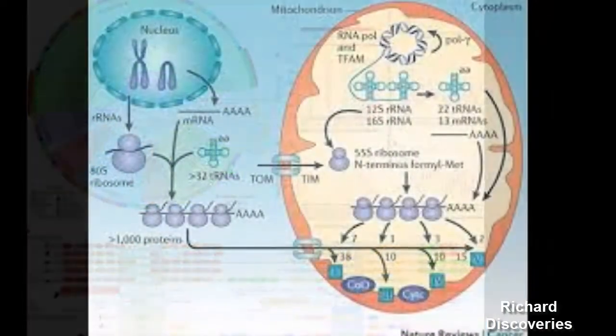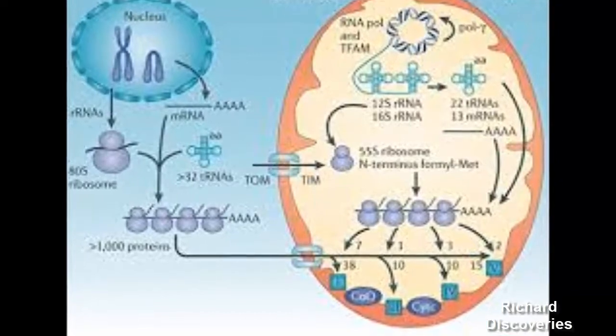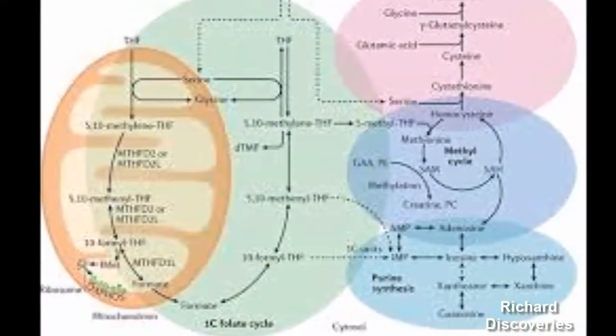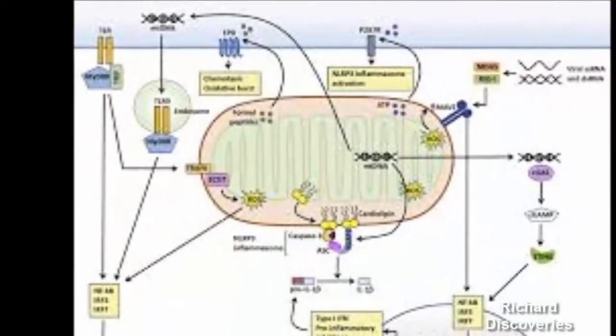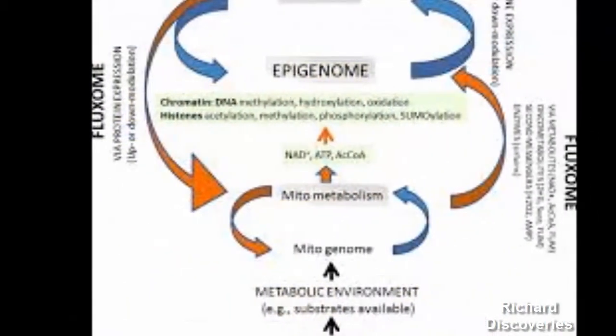Mitochondrial Eve and Y-chromosome Adam are two individuals who passed down a portion of their genomes to the vast expanse of humanity. Previous research indicated that Y-chromosome Adam lived much more recently than mitochondrial Eve, according to Professor Carlos Bustamante.